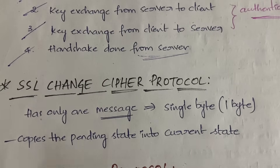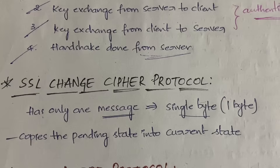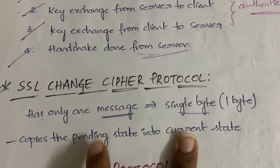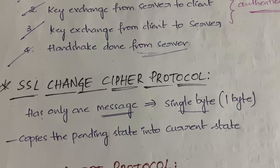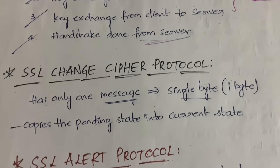The next protocol is the SSL change cipher spec protocol. It has only one message, and that message is a single byte in size. What it does is copy the pending state into the current state — any pending or yet-to-be-addressed messages in the communication are copied into the current state. That is the only thing the SSL change cipher spec protocol does.